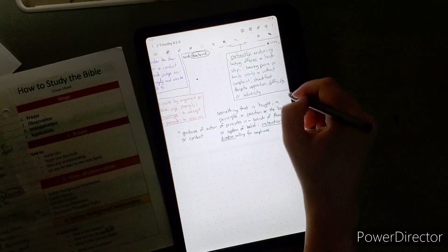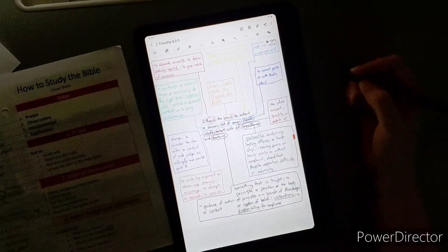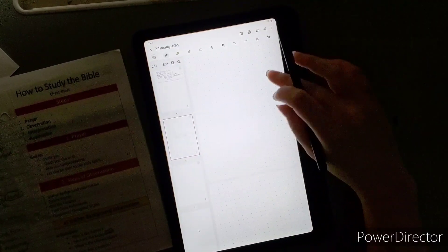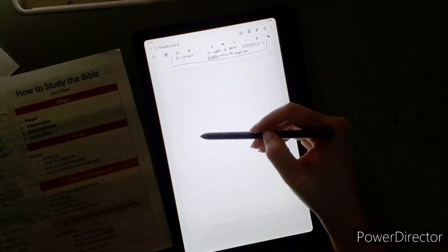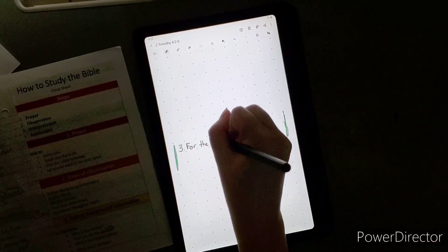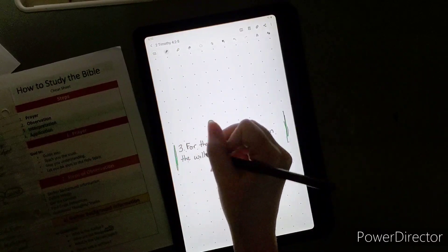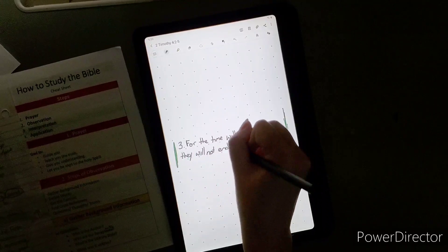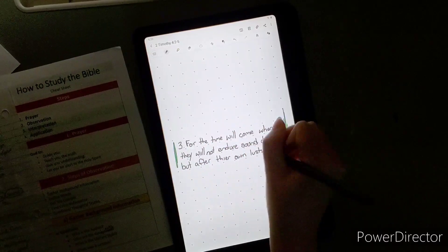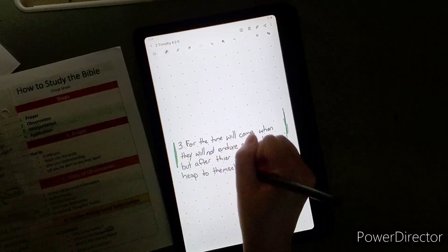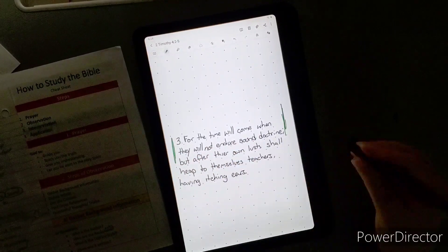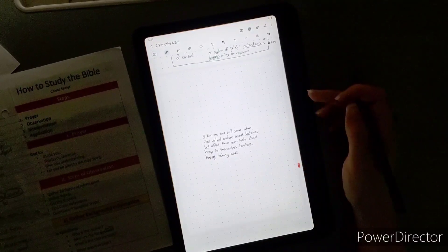Verse three says for the time will come when they will not endure sound doctrine, but after their own lust shall they heap to themselves teachers having itching ears. We're going to do some definitions. The first one is endure. Endure is to continue in the same state, last, remain firm under suffering or misfortune without yielding. And it says they will not endure. That's a sad and scary thing. They won't endure sound doctrine.